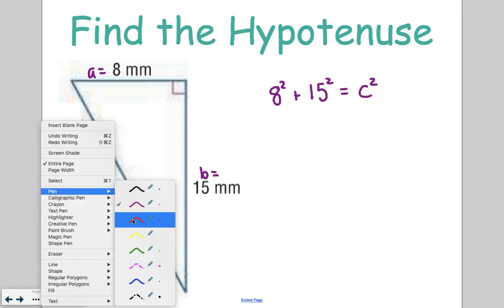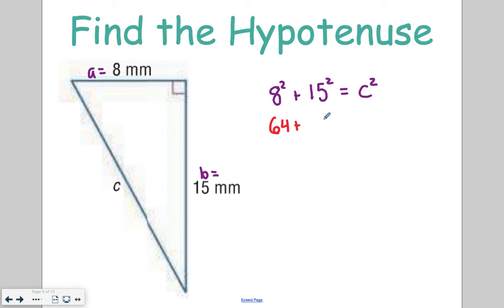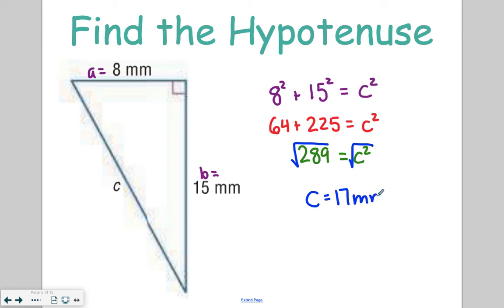Now, you can go ahead and solve or simplify this. 8 squared is 64, plus 15 squared is 225, equals C squared. So then we can keep simplifying and say 64 plus 225 is equal to 289, that equals C squared. Then we can go back to what we learned in lesson 10.1 about solving squares. We can take the square root of both sides, and we're going to get that C is equal to 17 millimeters. We don't use negative 17 in this case, because you can't have a negative measurement for the side of a triangle. So our hypotenuse for this particular triangle is 17 millimeters.